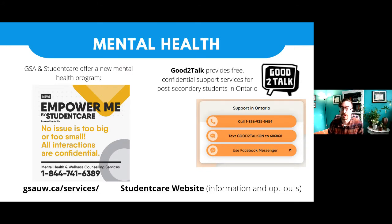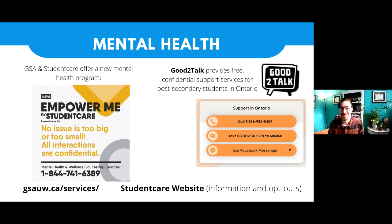Mental health is one of the services that has grown the most over the last several years, and especially during the pandemic. There are two key services to highlight. One is a GSA and Student Care service called Empower Me — there's a phone line for access to counseling services all over phone or video call, which is unfortunately perfectly suited for the online world we're living in right now. There's also a service available in Ontario called Good2Talk, offering free confidential support for students in Ontario; the phone number and other contact methods are on this slide.